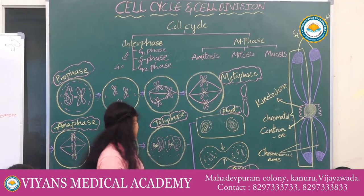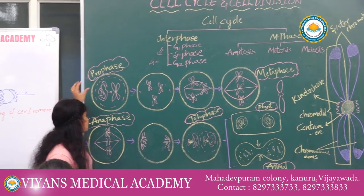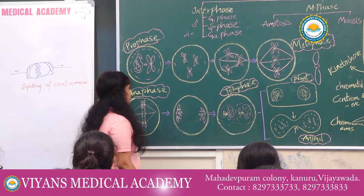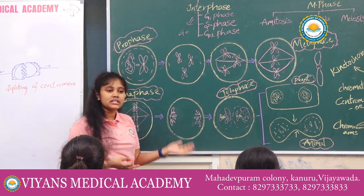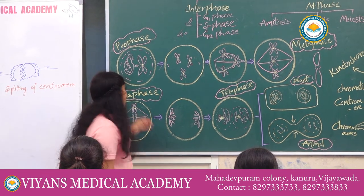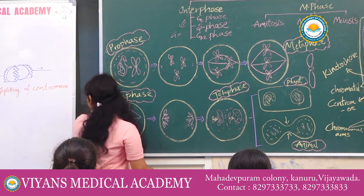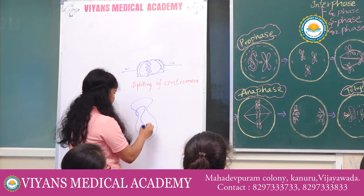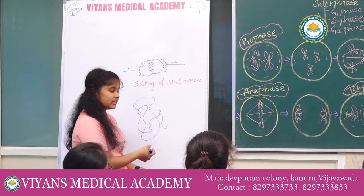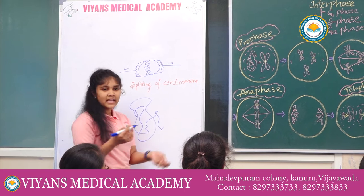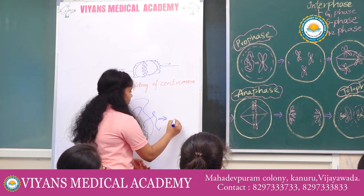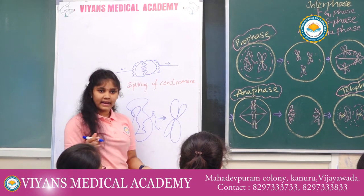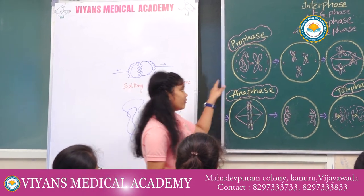Let us enter into mitosis. The first phase is prophase. The initiation of prophase can be identified by the condensation of chromosomes into a compact structure. The chromosome structure is normally irregular and very hard to divide. So nature has adopted a way to mold it into a compact structure, which makes division much easier. Thus, condensation occurs in prophase.